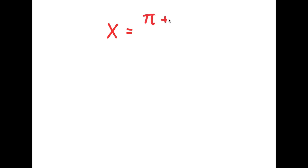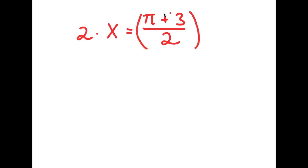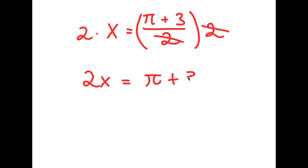What I'm first going to do is start with the statement: x is equal to (pi plus 3) over 2. All I'm doing is giving a value to a variable, which is completely legal. Now I'm going to multiply both sides by 2. So I get 2x is equal to (pi plus 3) over 2 times 2. The two twos cancel out, giving me 2x is equal to pi plus 3.